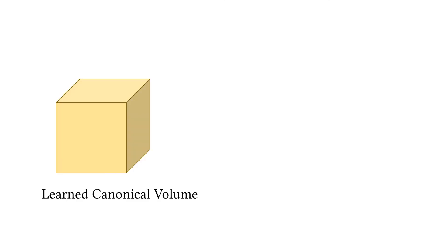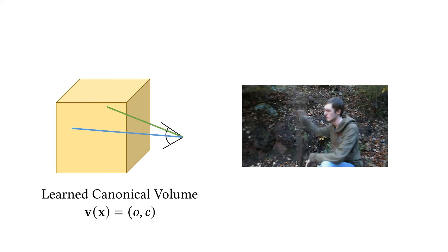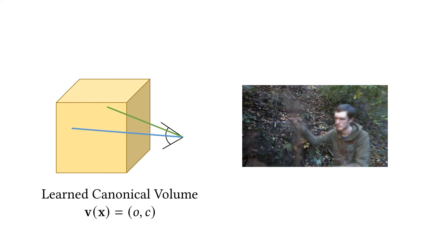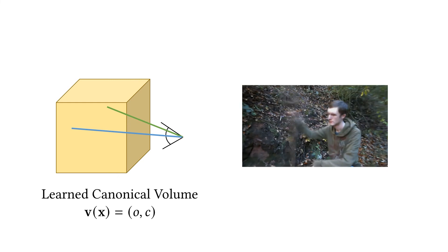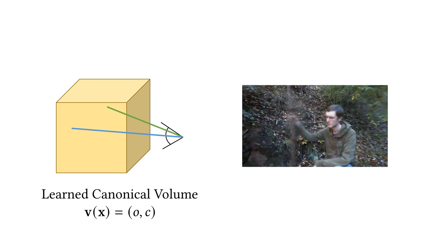So how does our method work? We start with neural radiance fields, which represent a 3D scene as a function that maps any 3D point to its opacity and color. This mapping is implemented by a multi-layer perceptron. Given a radiance field, we can specify a virtual camera and trace rays from it. We then employ volumetric rendering by sampling the radiance field along each ray, and integrating the samples to obtain the final image.